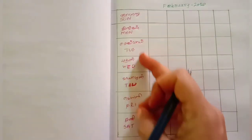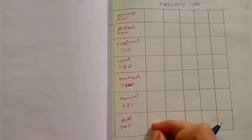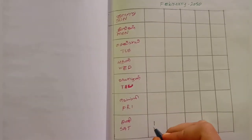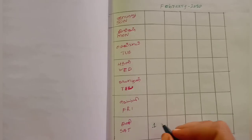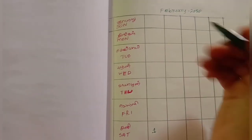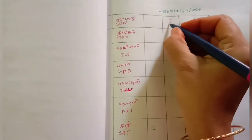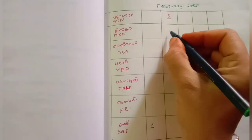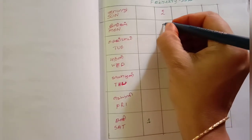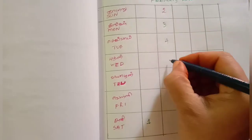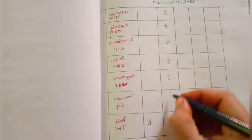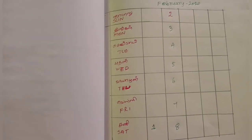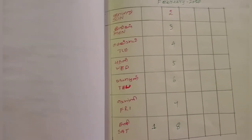I will write the first day as Saturday. Then the subsequent dates: 2, 3, 4, 5, 6, 7, 8 — filling in the calendar row by row.